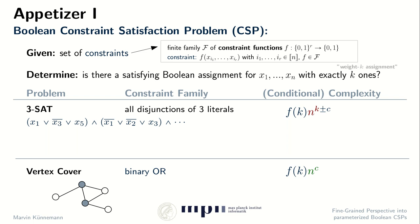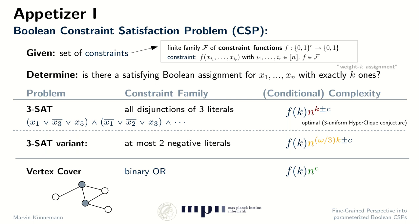So we want to classify problems with regard to their best possible running time. In fact, we will see that this brute force running time is essentially optimal under some assumption on detecting cliques in hypergraphs. Interestingly, if we just were to disallow a single type of constraint from our constraint family — namely, we disallow clauses that only have negative literals — then we can actually solve this problem faster in time almost n to the two-thirds times k, where omega is the matrix multiplication exponent. This running time is essentially optimal under the Klee conjecture.